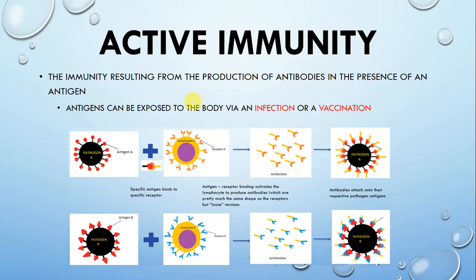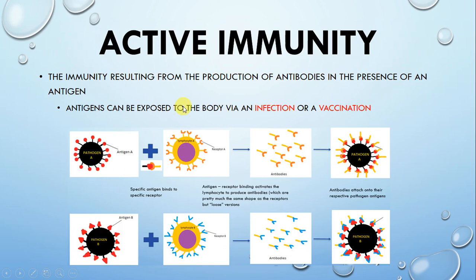So what is active immunity? If you watched my previous video, you should be familiar with the flow chart — that is active immunity, which is the immunity that results from the production of antibodies in the presence of an antigen. Antigens are present on the surface of pathogens and are very specific in shape. How antigens are exposed to the body can be either from a natural infection or a vaccination.